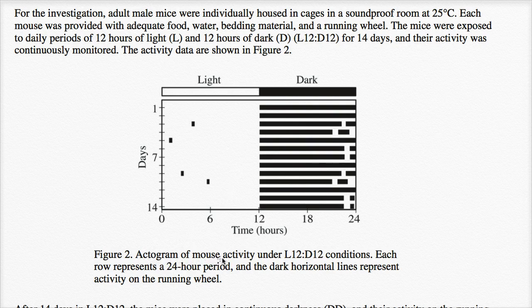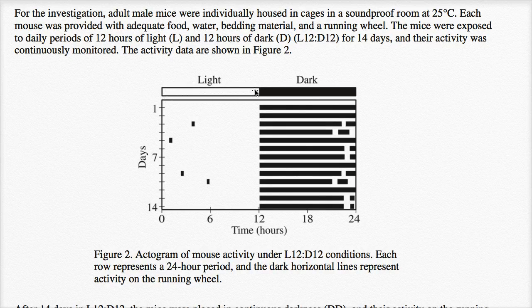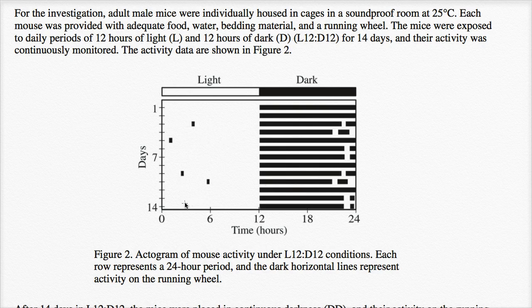All right, so this is an actogram of mouse activity under L12:D12 conditions. Each row represents a 24-hour period, and the dark horizontal lines represent activity on the running wheel, just like we saw before. But this is actual data that we are recording. So in the first 12 hours, the mice are in conditions where there's light. And you can see for the most part, on day one, that we detect no activity. On day two, we also detect no activity. On day three, we detect a little bit of activity, but for the most part, when it's light, we detect very little to no activity.